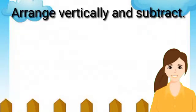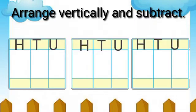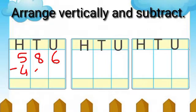Let's solve the exercise. Arrange vertically and subtract. First example: 586 minus 425 is equal to 161.